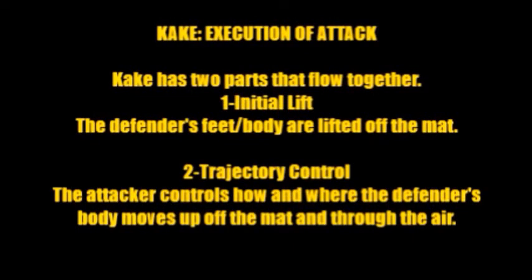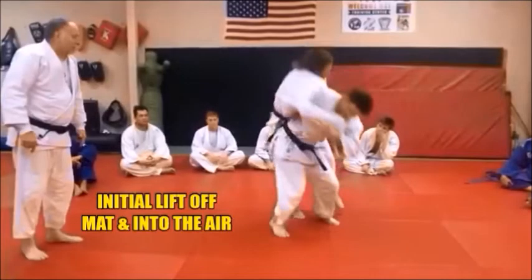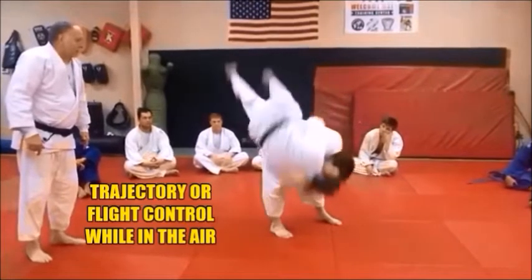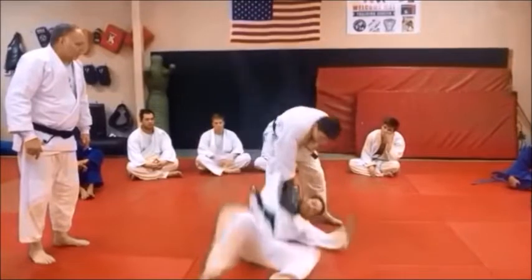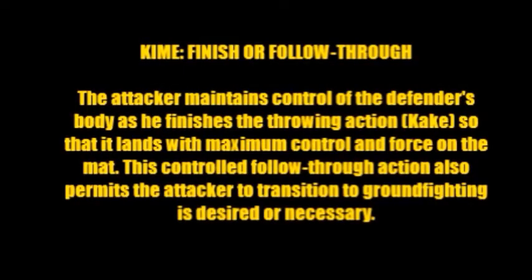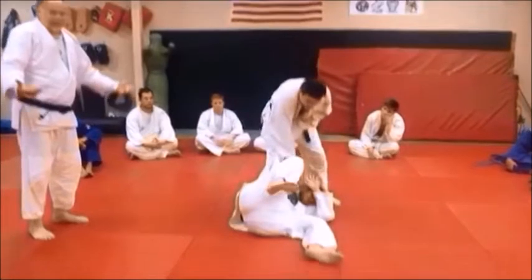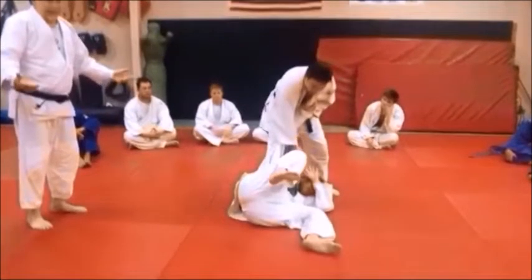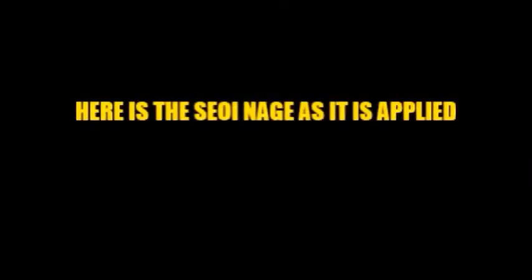Kake: execution of the throw, the attack. Two main things — you have to actually lift him up, the initial lift, and then trajectory control. It's kind of like a rocket; you've got to guide him over your body onto the mat with control and force. Kime is finishing the follow-through. You maintain control: once you throw him, you follow through and make sure he hits the mat where you want him to hit the mat and how hard you want him to hit the mat. So that's a look at how Seoi Nage works — let's take a look at it in its full execution. Come around, turn, and he puts him in position and throws him.